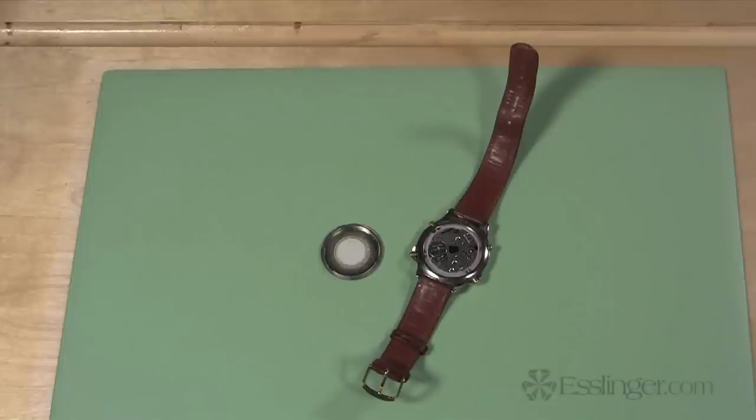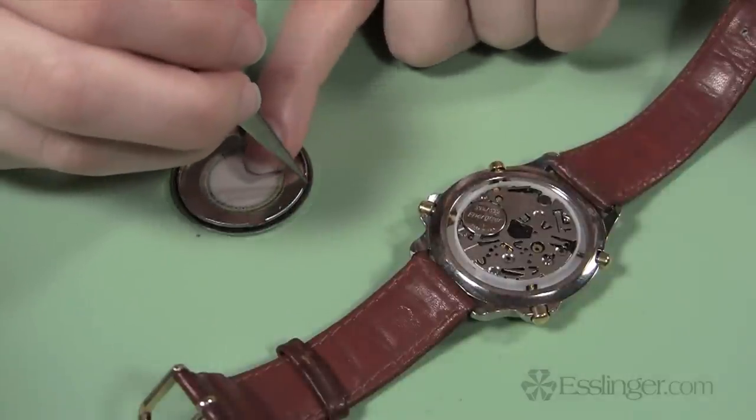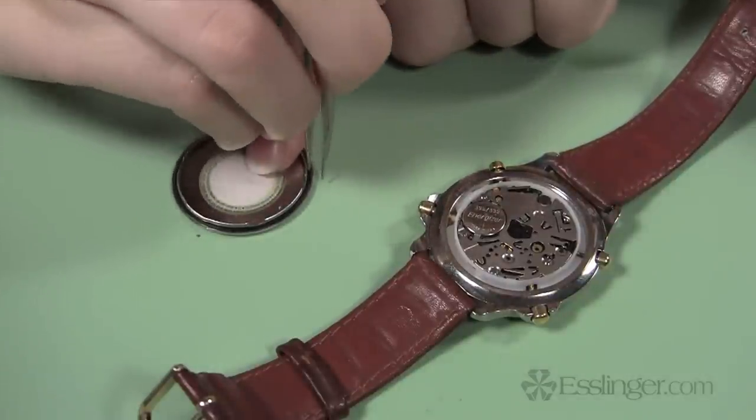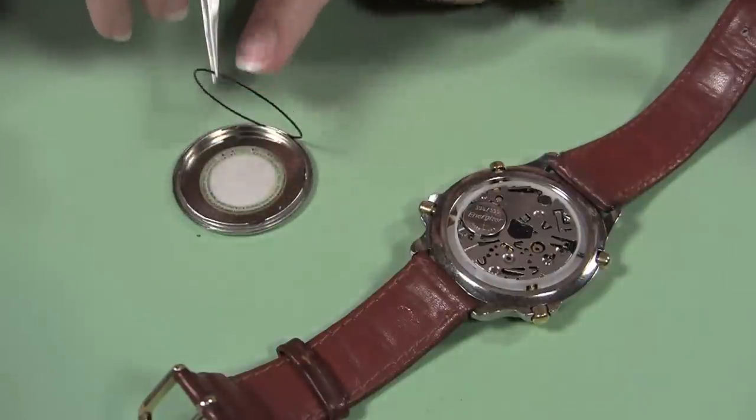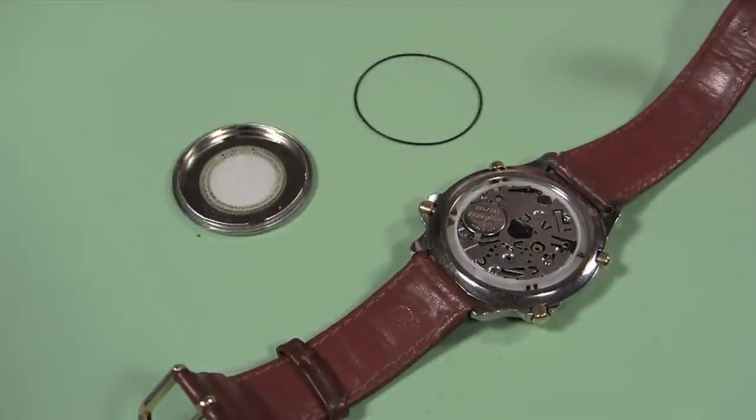Take the watch case back and place it upside down on a flat surface. Before measuring the gasket, you will need to remove the old gasket if it has not already broken and fallen off on its own. Remove the old gasket by pulling it away from the back with your tweezers and sliding it off.